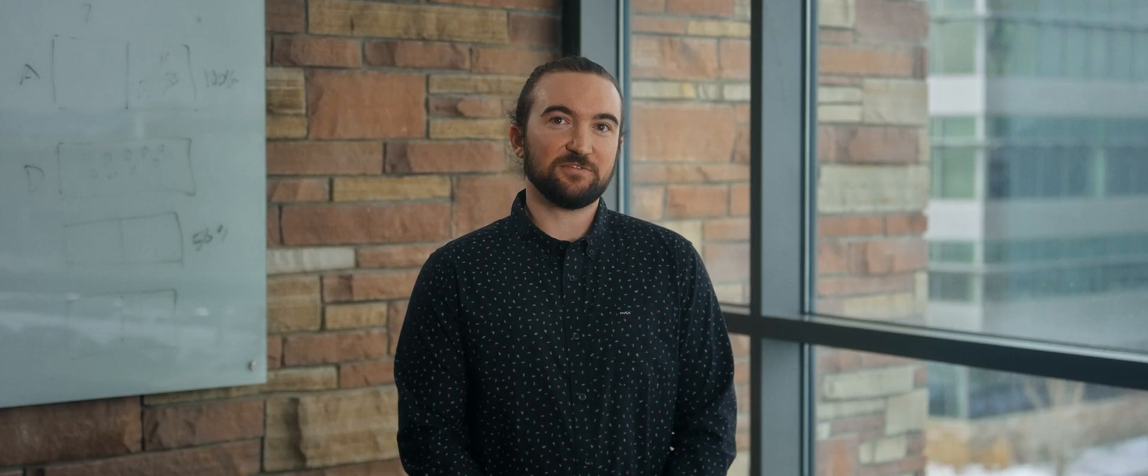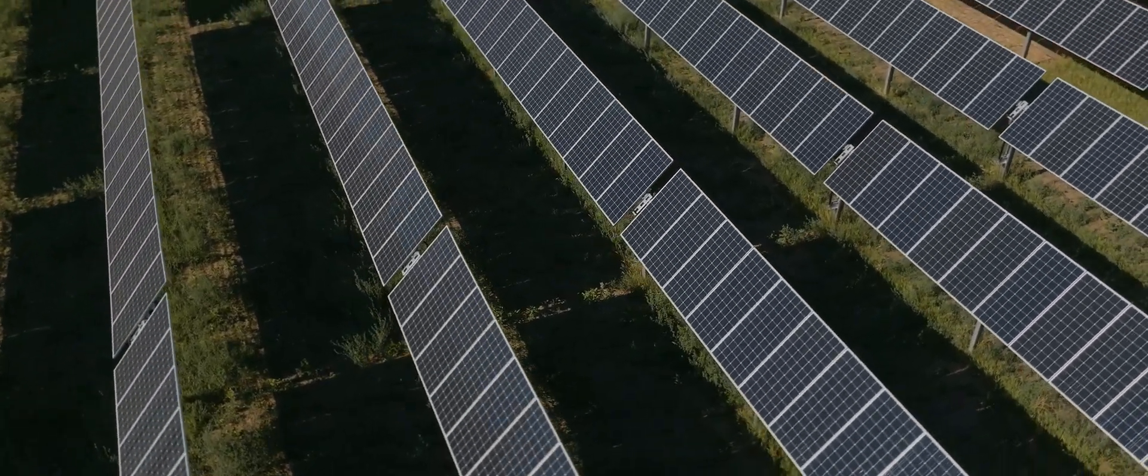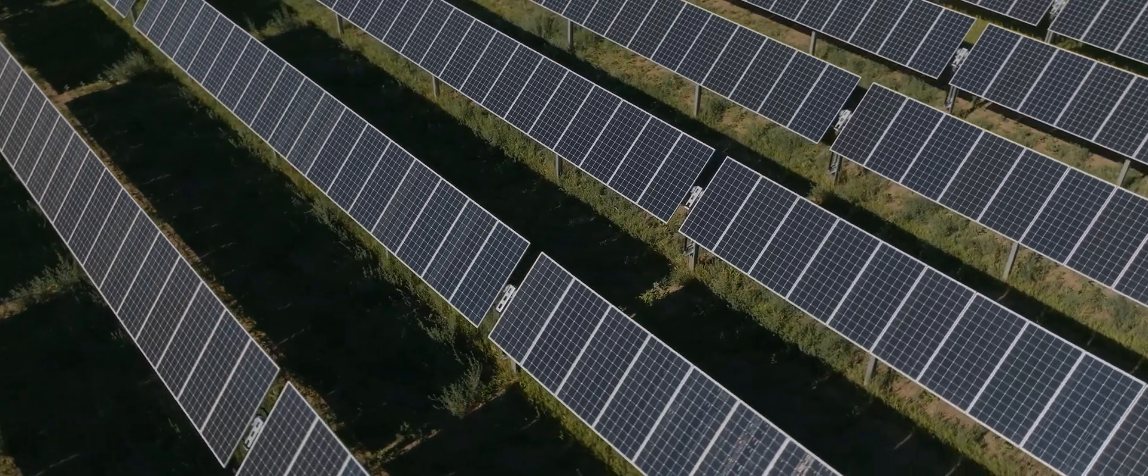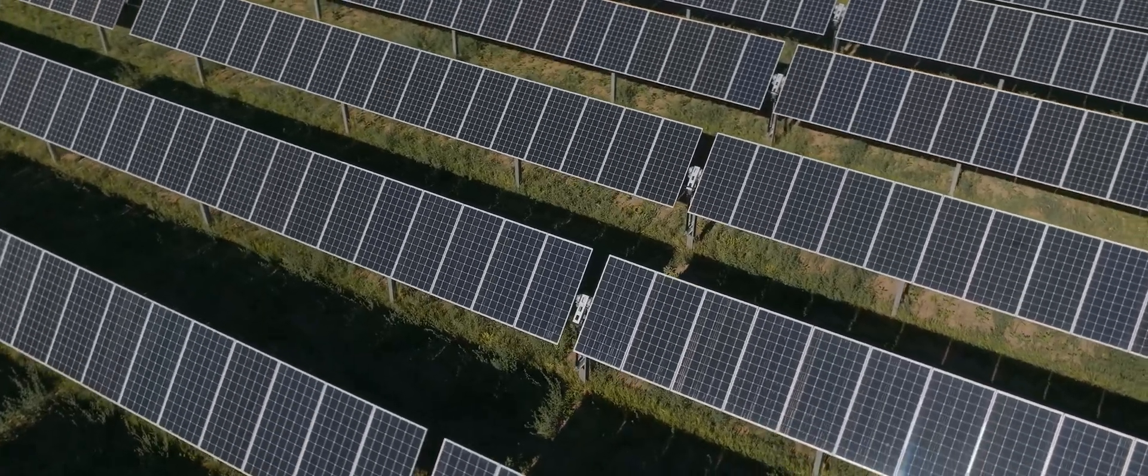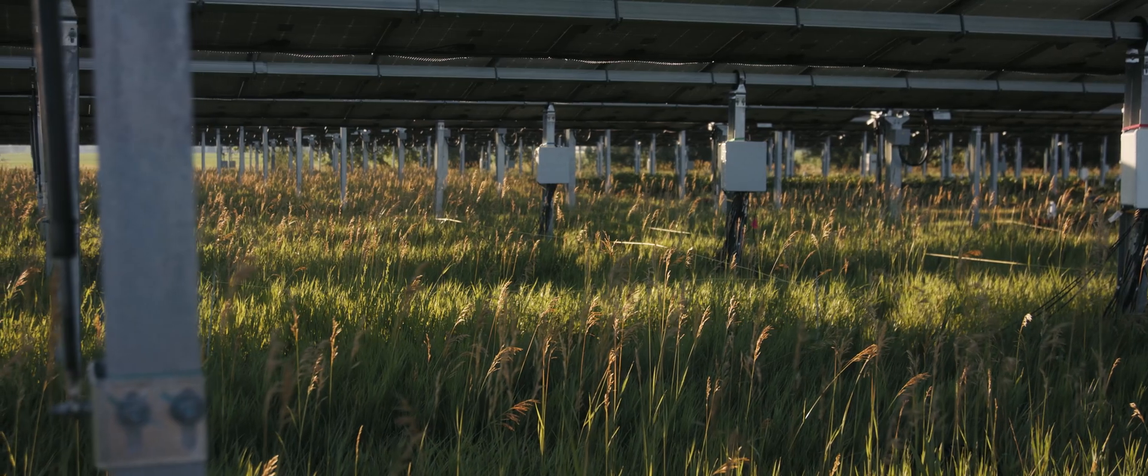I think the biggest takeaway is that you have this diversity of responses within a solar array. The microclimates could potentially increase resilience to climate stress because of the reduction of evapotranspiration and the increase in overall productivity on different drip edges.